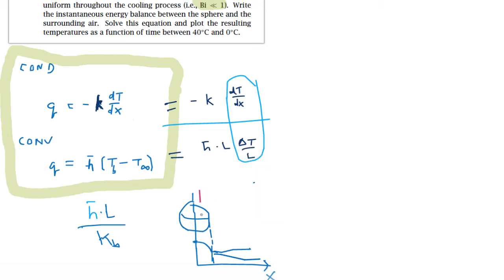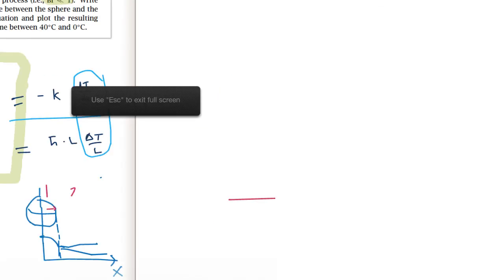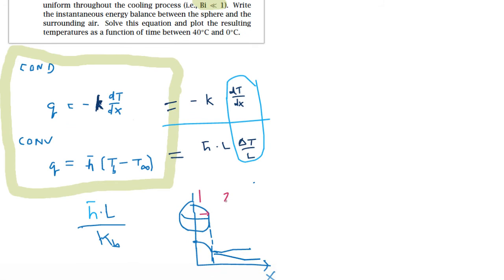Again, two-step process: one is to the surface and the second process is away from the surface. So again you have conduction and convection.